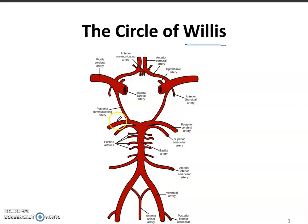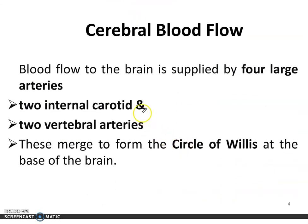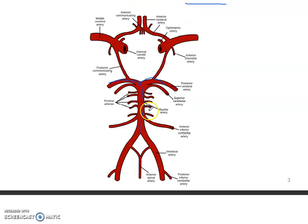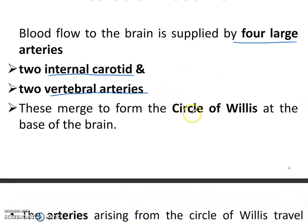It is called the circle of Willis. These are all interconnected to each other. The main arteries are the posterior cerebral artery and the vertebral artery, and they are making this strong cerebral blood flow. The blood flow is supplied by four large arteries: two internal carotid and two vertebral arteries, which together form the circle of Willis at the base of the brain.